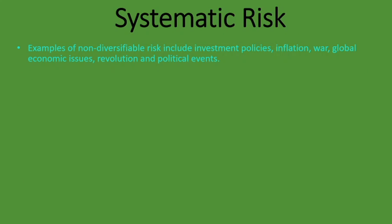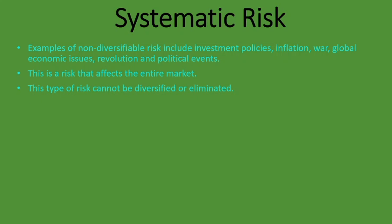Examples of systematic risk — non-diversifiable risk — include investment policies, inflation, wars, global economic issues, revolution, and political events. These examples affect the entire market regardless of which firm or industry you're in. Even if you diversify across various industries, these systematic risks will affect all of them. This type of risk cannot be diversified or eliminated.